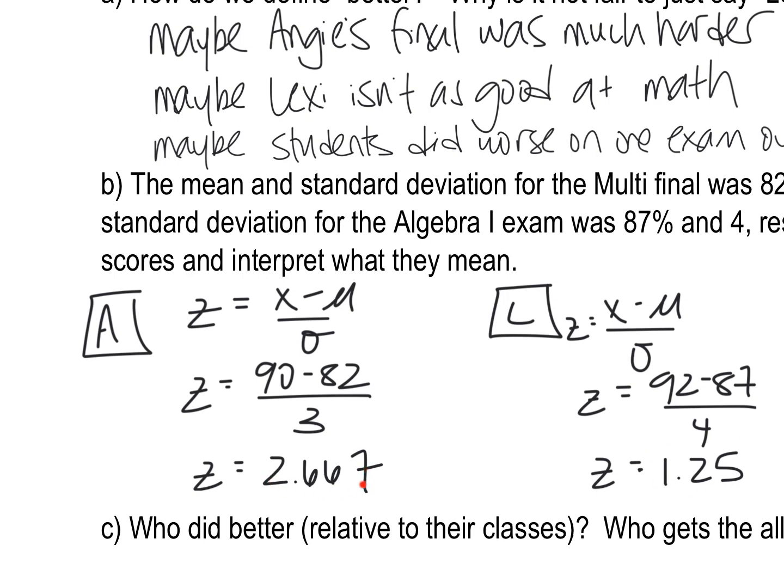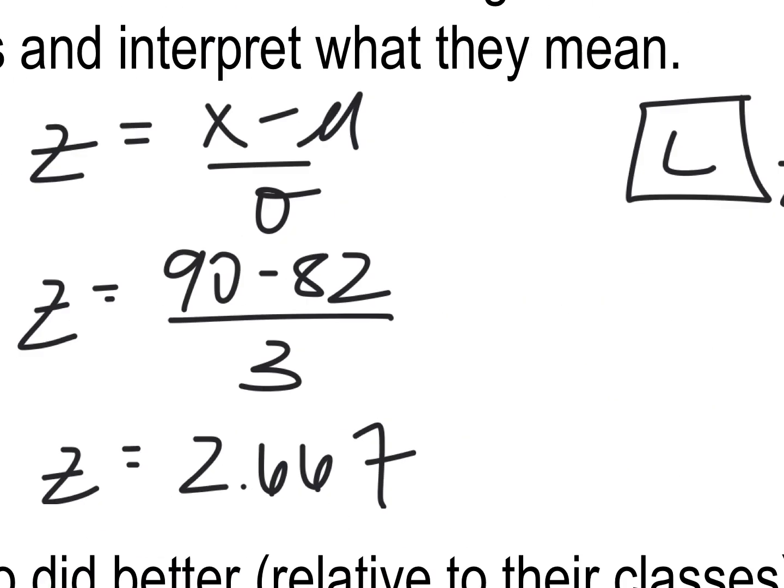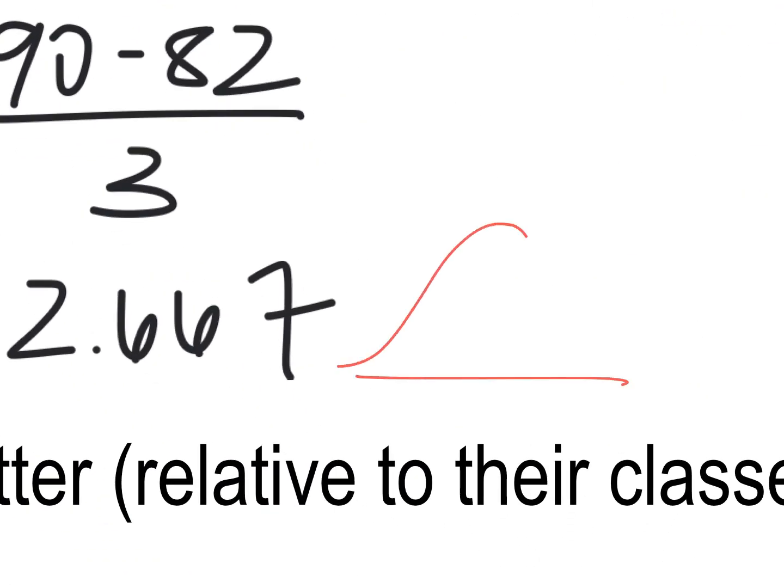But her score minus the average divided by the standard deviation, this number is higher than this number. What this means is Angie scored 2.67 standard deviations above the mean. Keep in mind what that means. Remember what our normal distribution looks like? One, two, three. Angie's score is somewhere way out here.